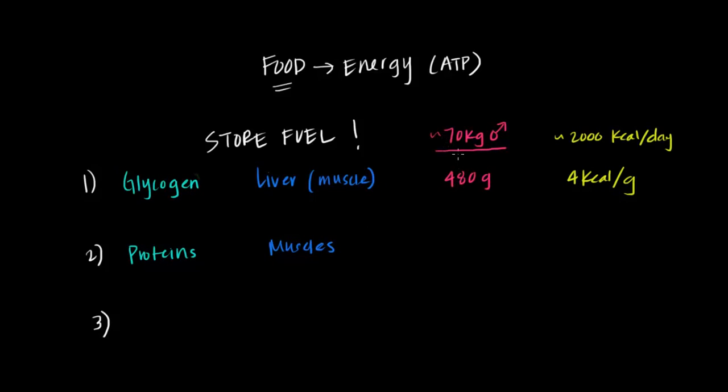And again, in an average 70 kilogram man, if we were to tally up how many grams of proteins, we would get around 6,000 grams. And again, similar to glycogen, we would be able to extract about 4 kilocalories of energy per gram of protein.